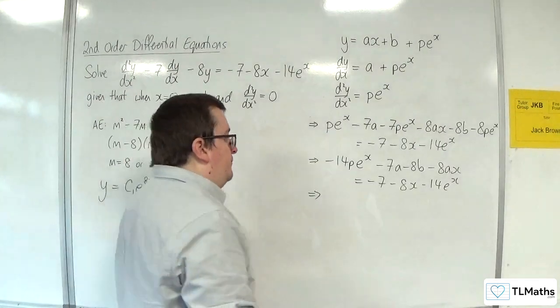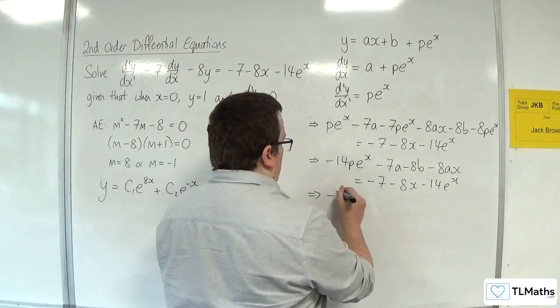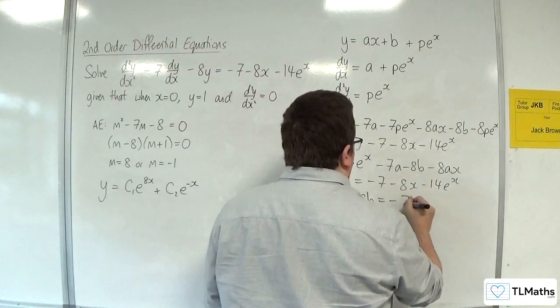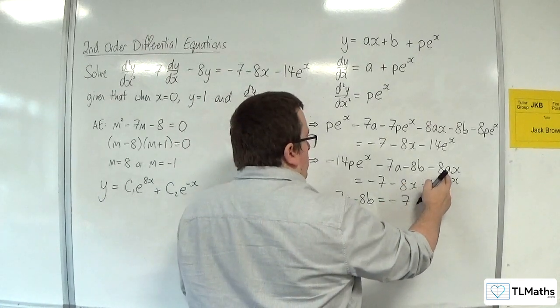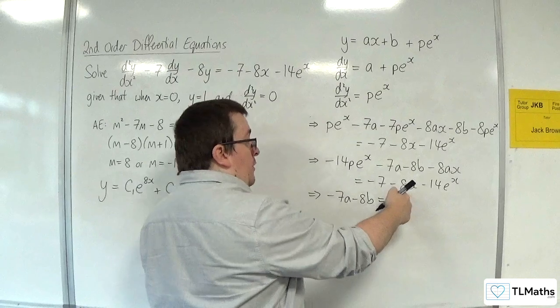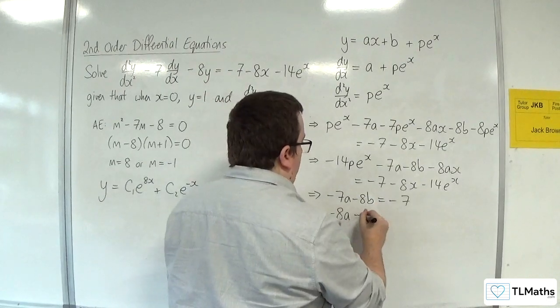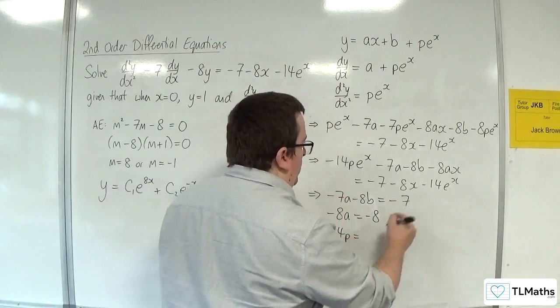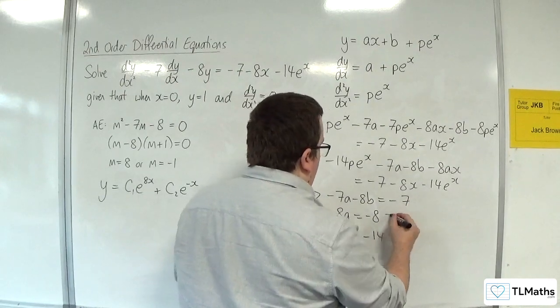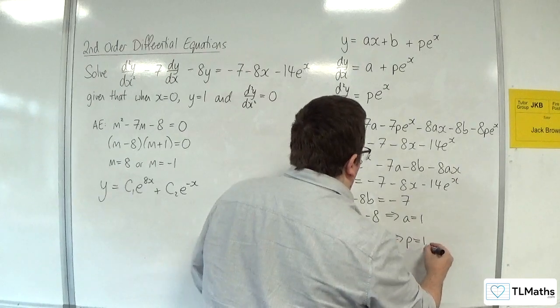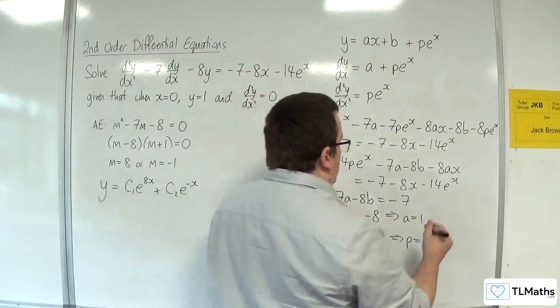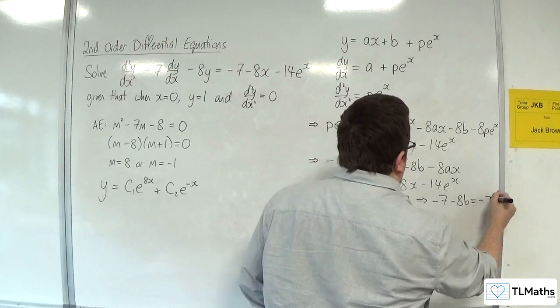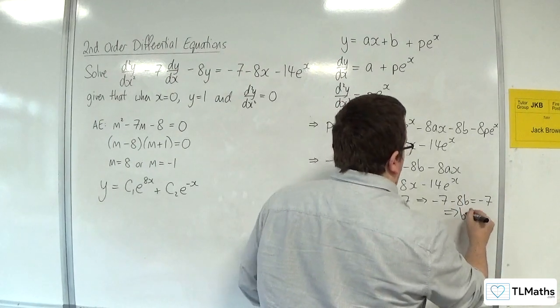Now we can compare coefficients. We have that the -7a - 8b, that's the constant term, so that's got to be equal to -7. We've got the -8a, the coefficient of x, has got to be equal to -8. And we've also got the -14p has got to be equal to -14. So clearly, a has got to be 1, p's got to be 1. And if a is 1, then that implies that we've got -7 - 8b = -7. So b is going to have to be equal to 0.